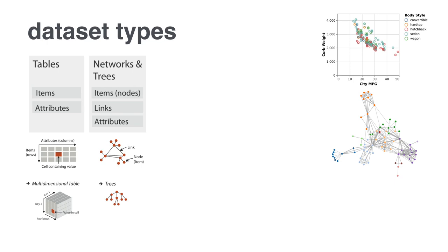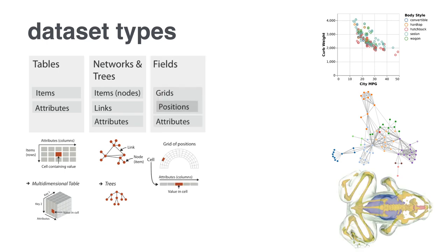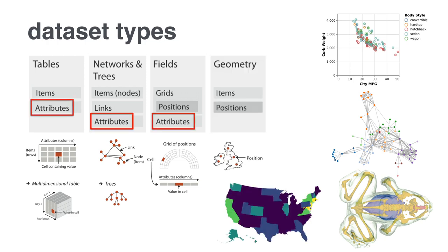Fields - for those of you working with scientific data that might have volumes - these are where you have some sort of continuous representation over a discrete set of data represented as a grid. Here we might do something like volume rendering. And then also geometry - anyone working with GIS data is going to have information about regions of space; choropleth maps are a really common thing to look at that data with. So that's what we mean by dataset types.